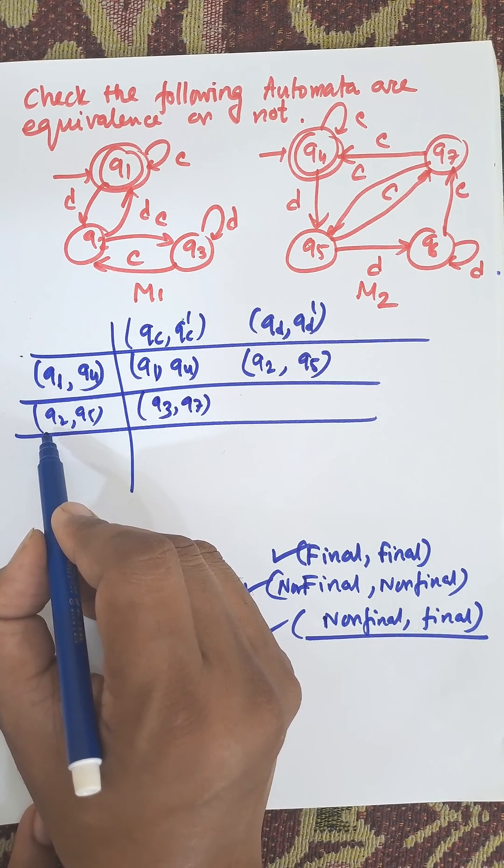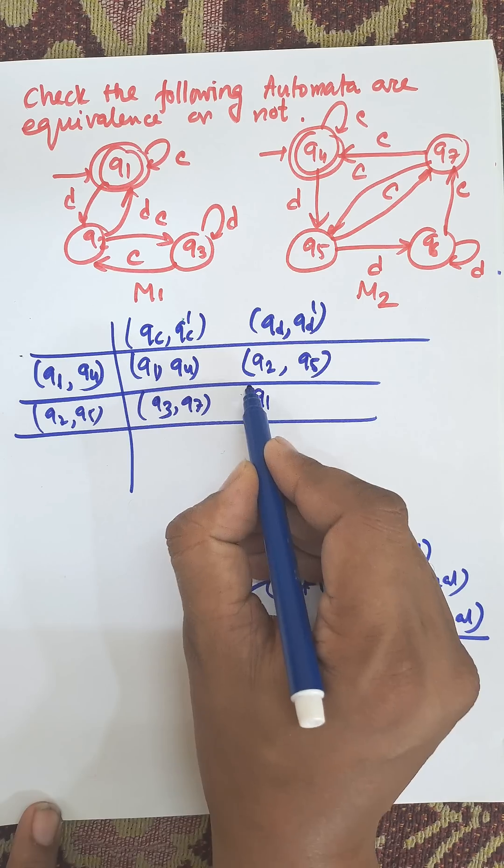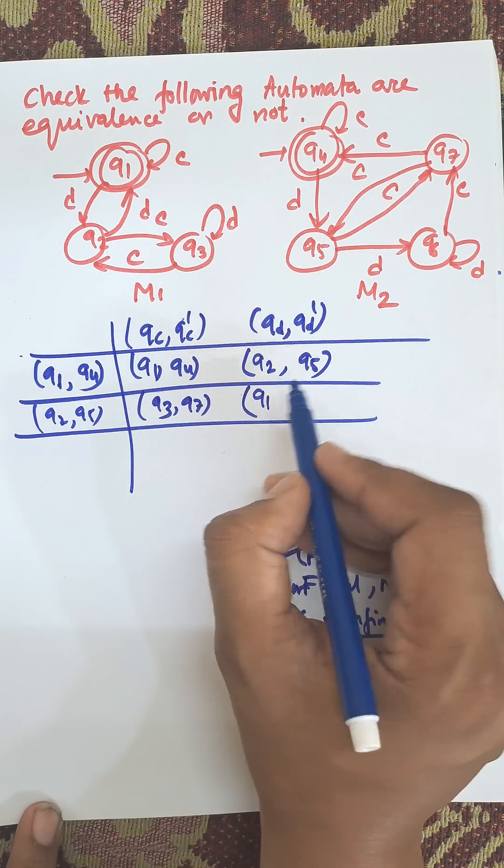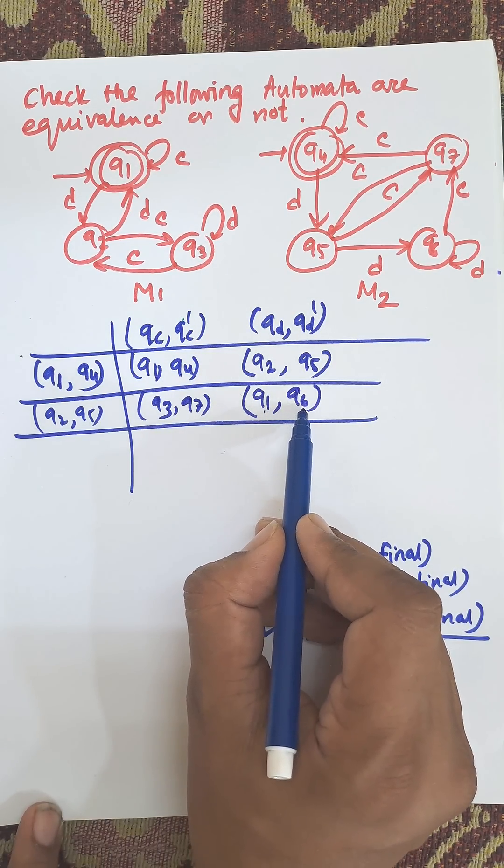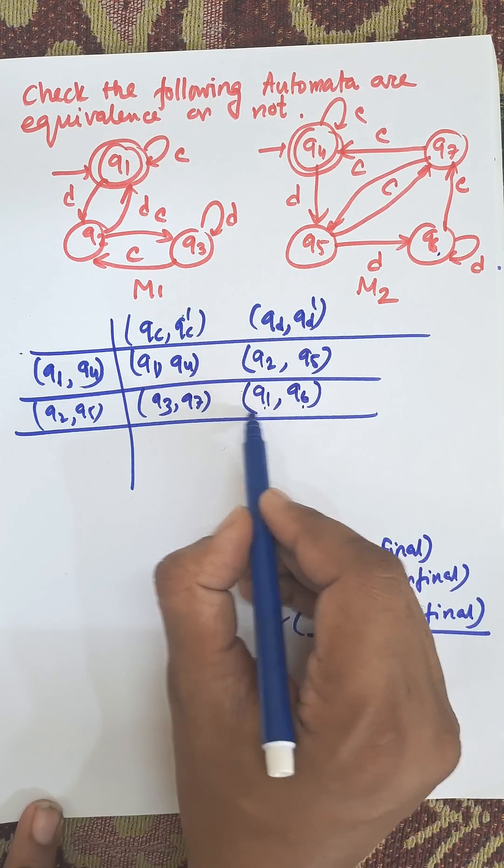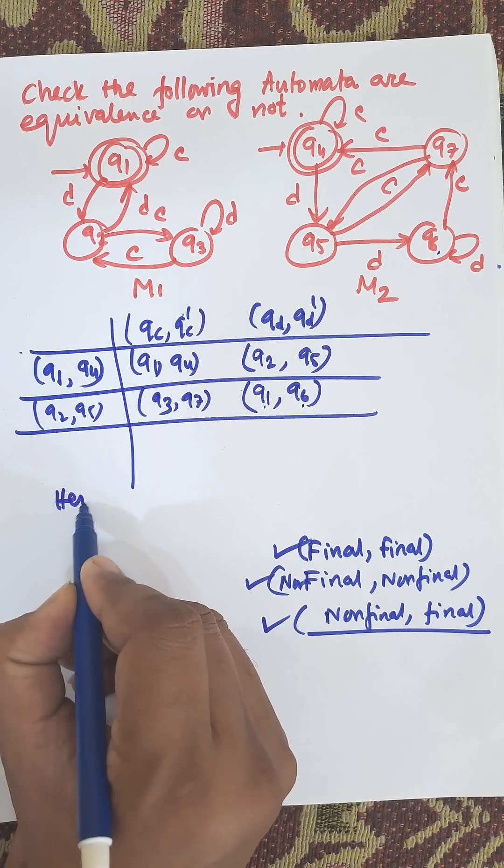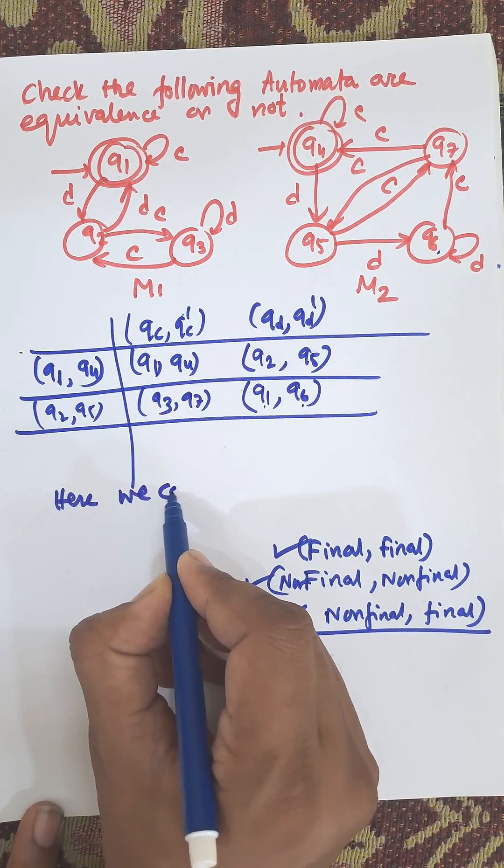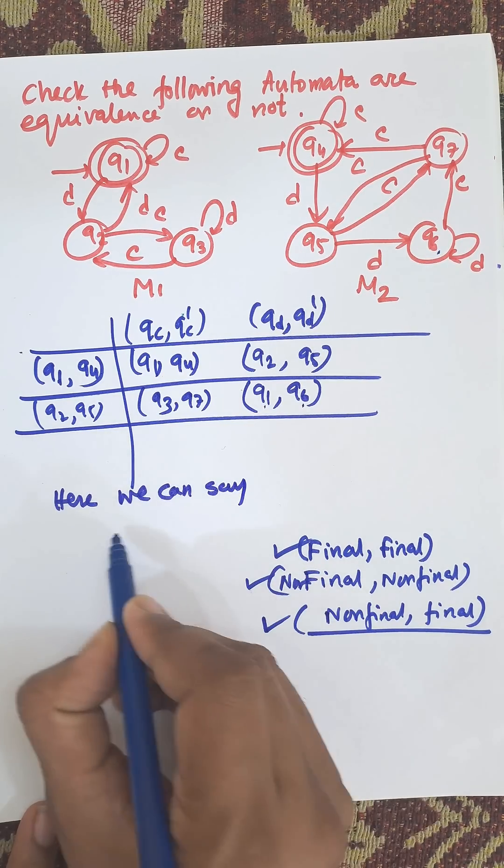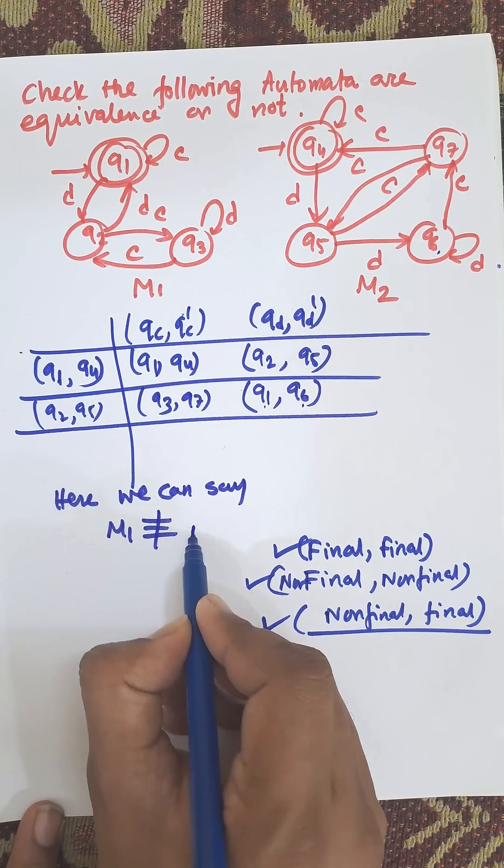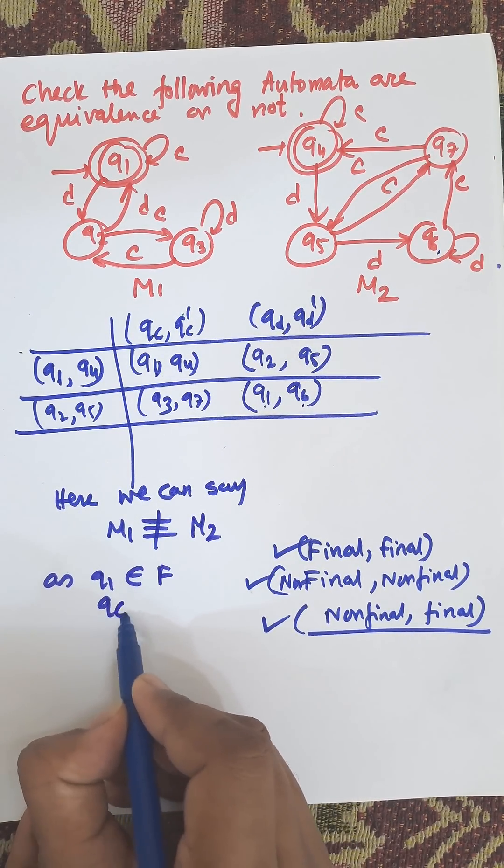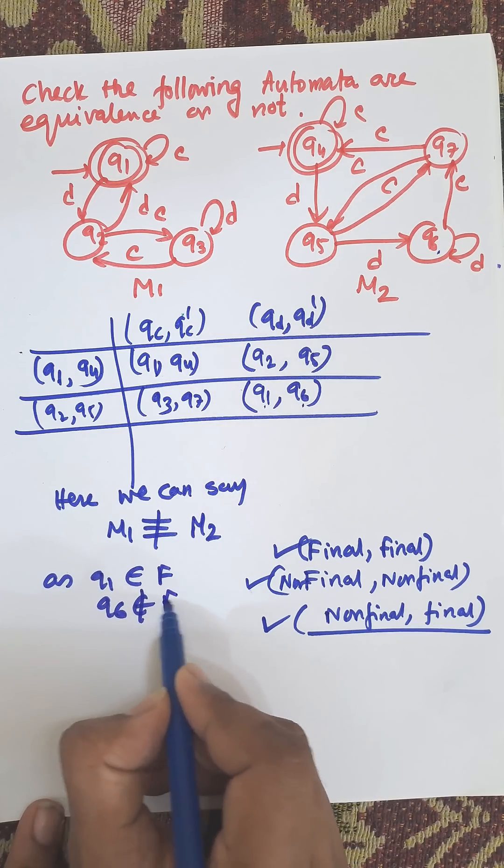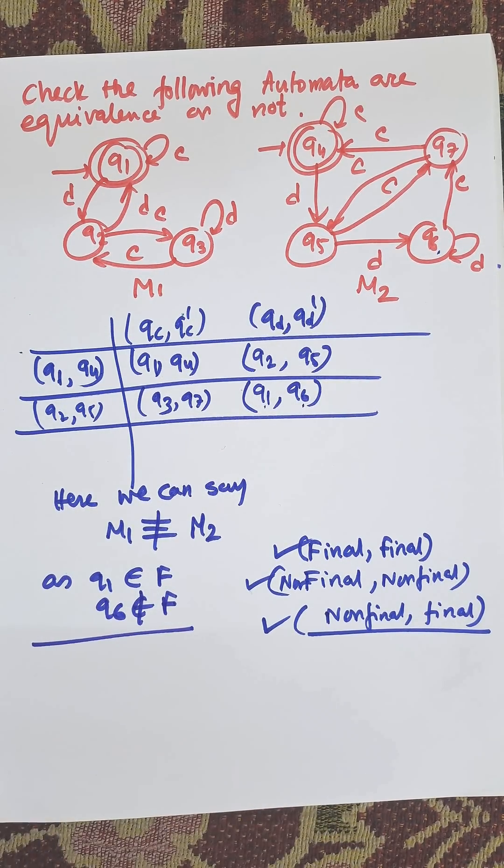This is the violation of law. Q1 is the final and Q6 is the non-final, so this is not accepted. Here you can say M1 not equivalent to M2 as Q1 belongs to final state but Q6 does not belong to final state, so they are not equivalent.